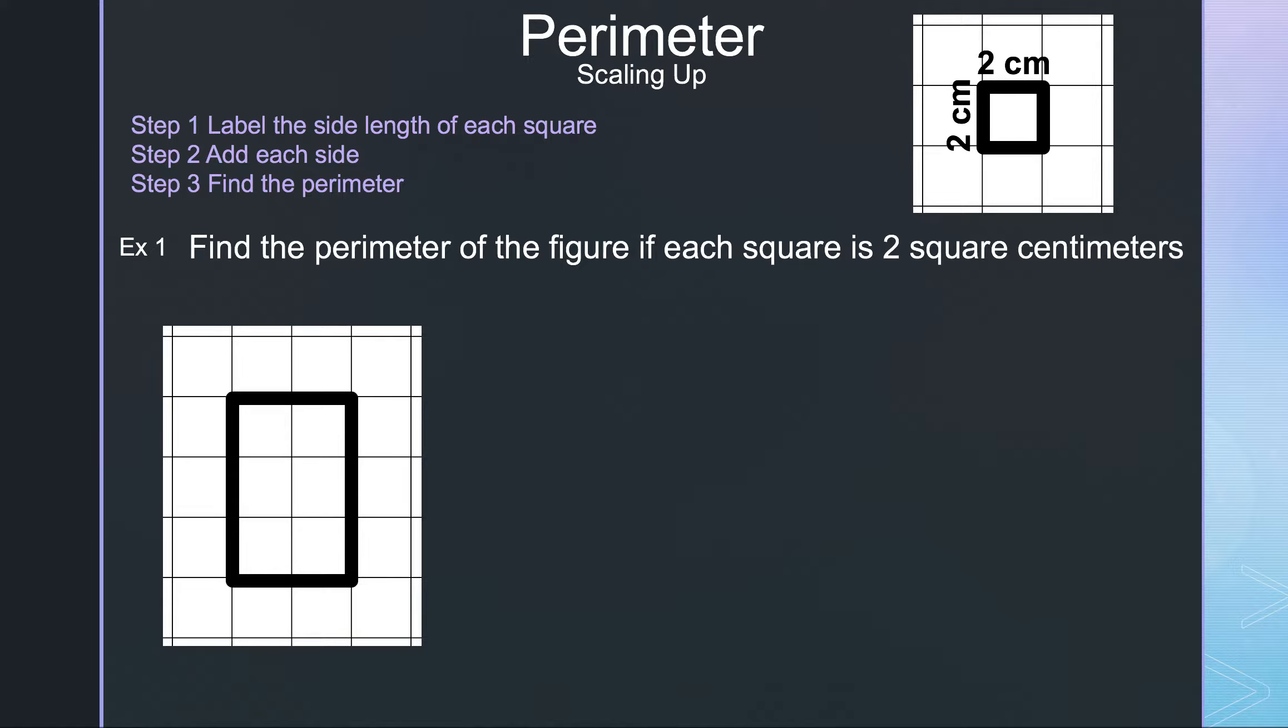Let's read the question because that's the first thing you should do. Find the perimeter of the figure if each square is 2 square centimeters. As you can see on the top right of the screen, each side length of the square is 2. That means everywhere we see side lengths, we need to put the number 2.